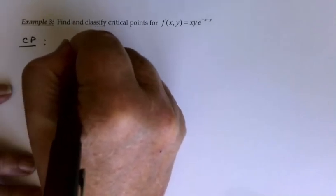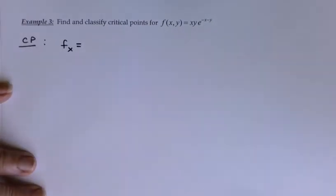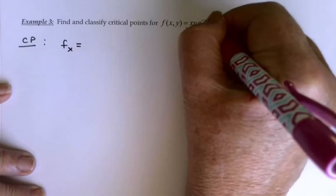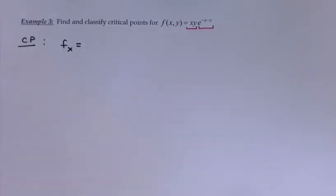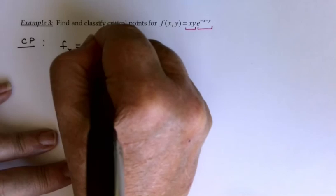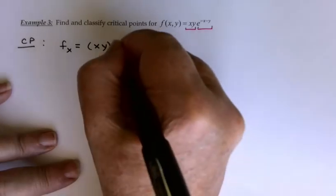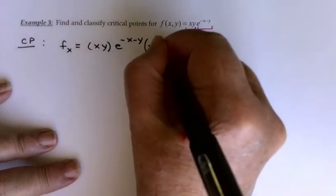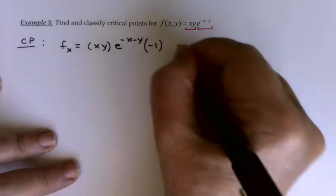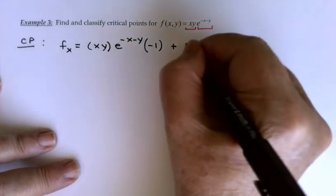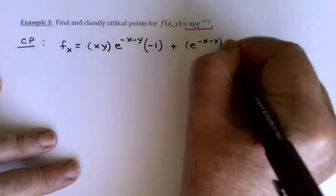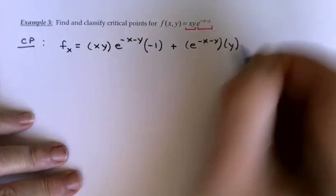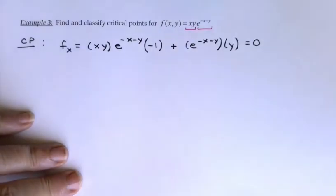Our first derivative is f_x. We will need to have a product rule on this. I'm going to consider xy to be my first factor and e^(-x-y) to be the second. So I'd have xy times the derivative of the exponential e^(-x-y), and a chain rule would give me a times negative 1, plus e^(-x-y), and then the derivative of xy with respect to x would be y. And that needs to be equal to 0.